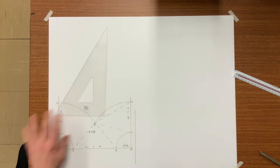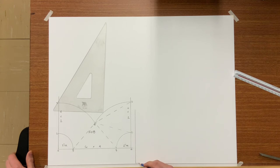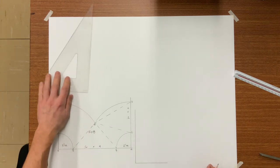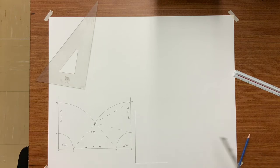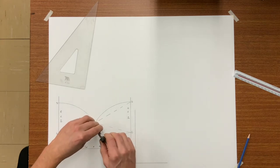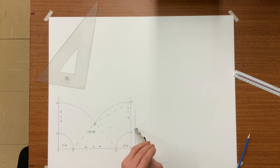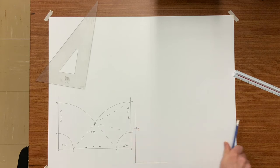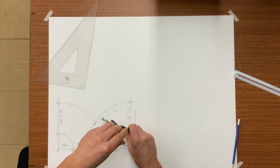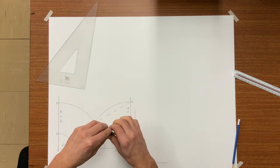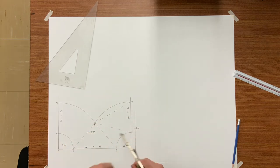So now I'm going to start building my true length triangle. Start with a vertical line and a horizontal line that must be 90 degrees. We are now going to set our dividers from B to E and transfer it to the vertical line and call it B, E. Do the same thing with C, E and also D, E.